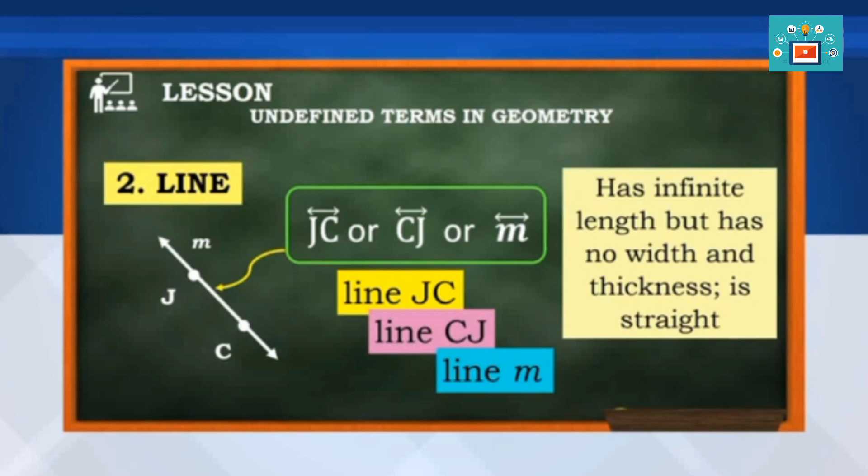These three names are referring to one line only. A line has infinite length but no width and thickness and is straight.